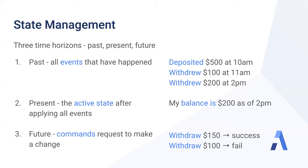When I try to put in the second command to withdraw $100, my command gets rejected. It doesn't cause any new events and doesn't cause any state change to the system. In some event sourced systems, we would also emit an event that a command has been rejected, in order to keep a full audit trail.